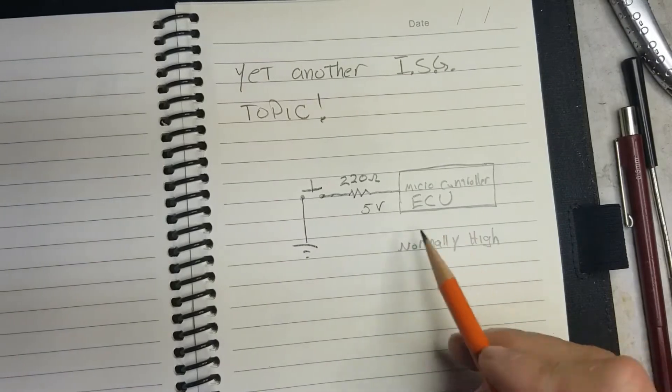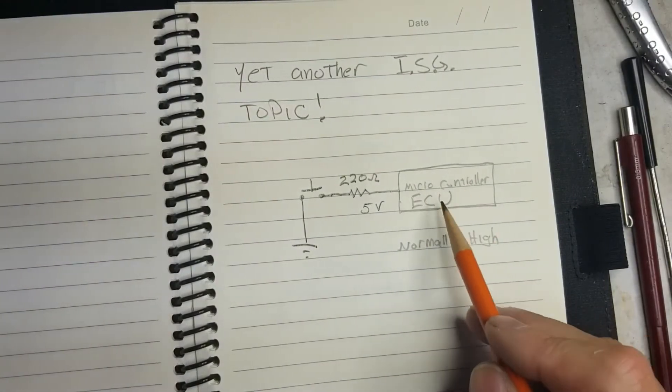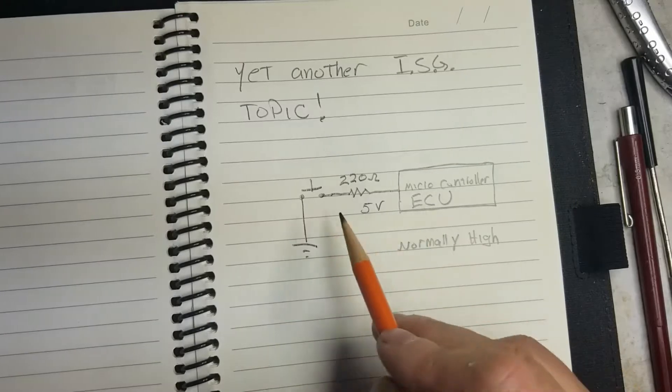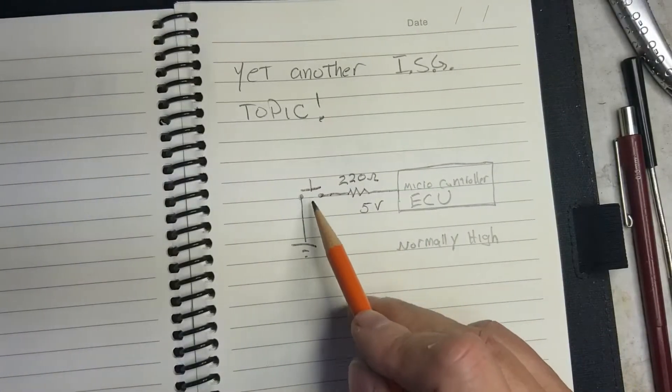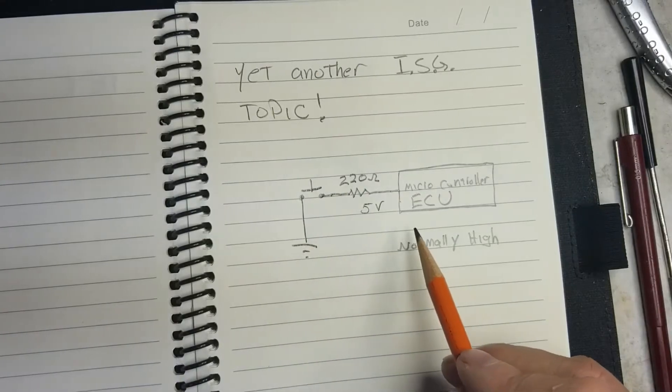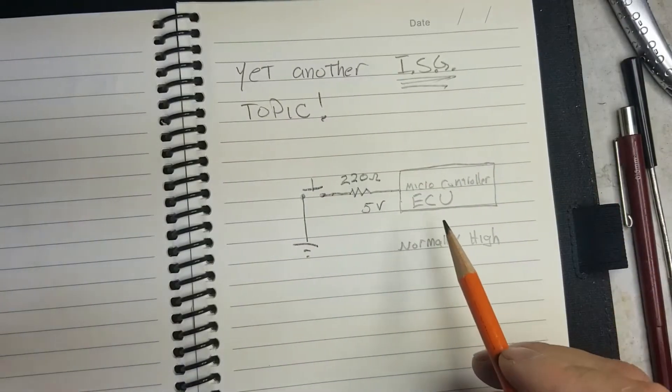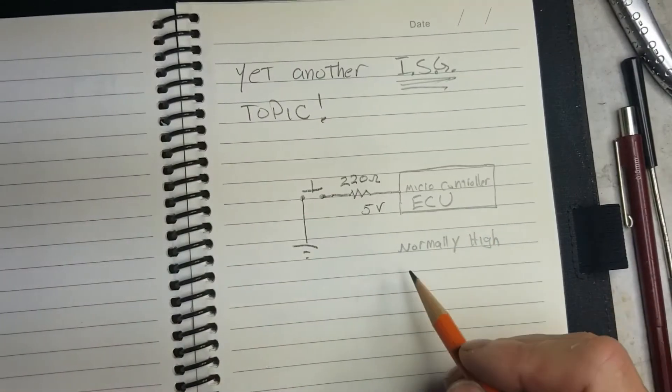Basically I drew it out here. You've got a microcontroller or your ECU that's controlling the push button. So when you push the button, the idle stop and go will either turn on or off. It's a flip-flop circuit, right?